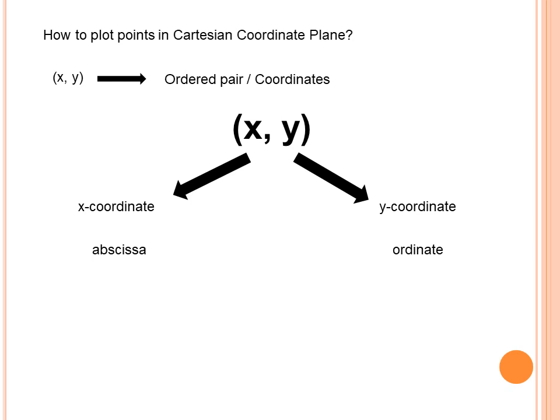Don't confuse coordinates with ordinate. For example, if we have the given point (5, negative 3), can we identify the x-coordinate? The x-coordinate is 5, and the y-coordinate is negative 3. So the abscissa is 5, and the ordinate is negative 3. Don't forget — each term also has another name.